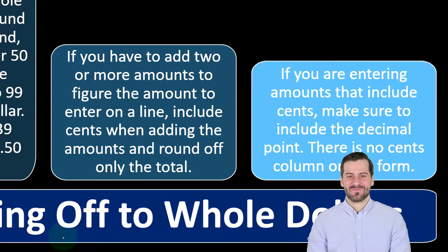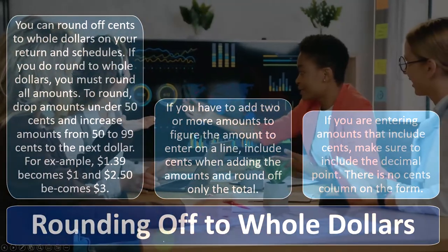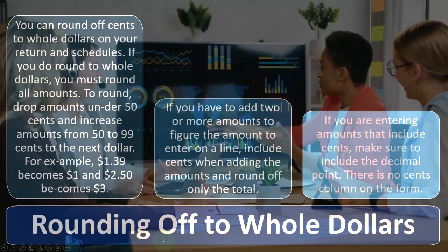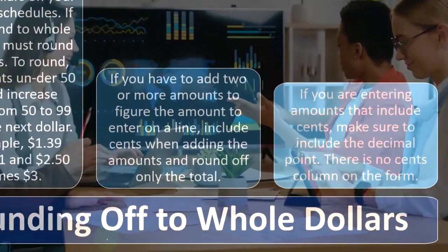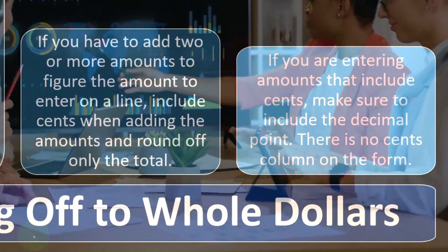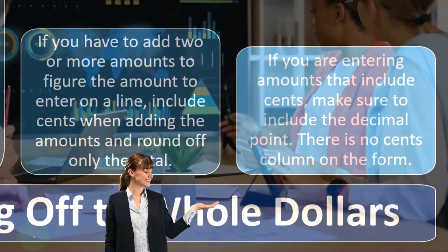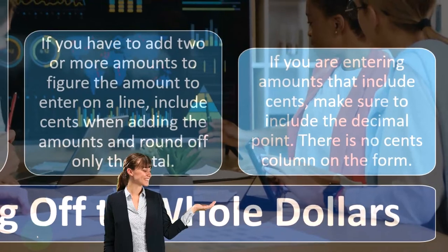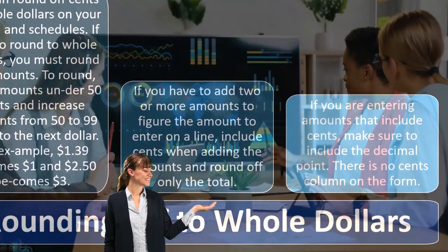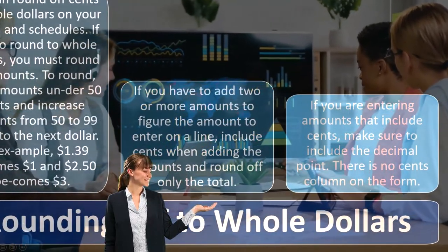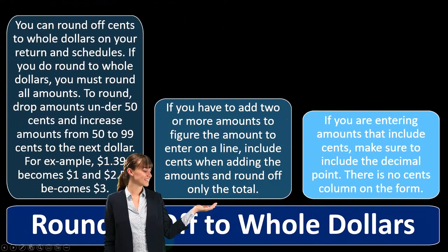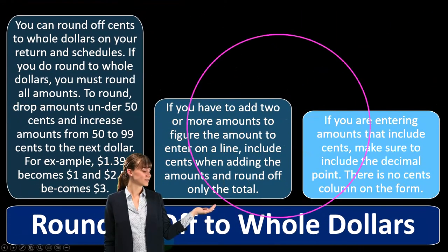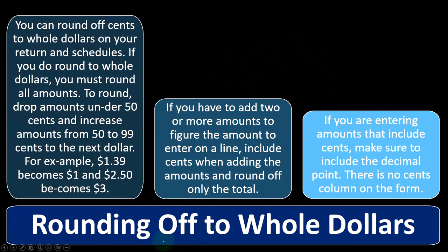There's no cents column on the form. In future presentations, we'll get into the general categories of reporting: W-2 income, interest income, dividend income, and capital gains income. Most of those have their own schedules, which is why we talk about them when we get to their own schedules that feed into the income line.